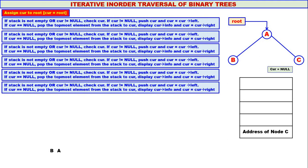Again, stack is not empty but curry is equal to null — one of those two conditions is true. We check curry. If curry is equal to null, pop the topmost element from the stack to curry. The topmost element is address of node C — that is popped and assigned to curry. Display curry info — C is displayed. Curry moves to curry's right. There is no right child for C, so curry becomes null.